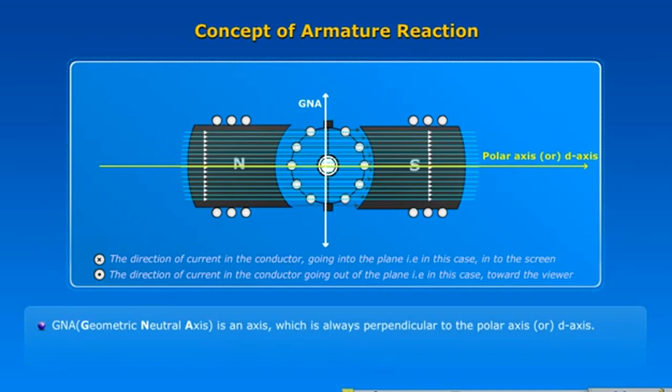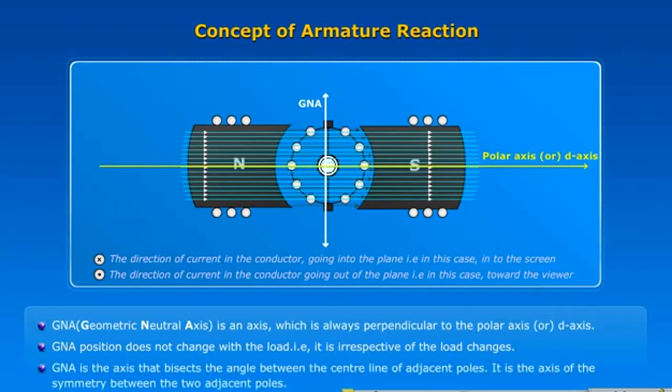GNA, Geometric Neutral Axis, is an axis which is always perpendicular to the polar axis or D-axis. GNA position does not change with the load, that is, it is irrespective of the load changes. GNA is the axis that bisects the angle between the center lines of adjacent poles. It is the axis of symmetry between the two adjacent poles.